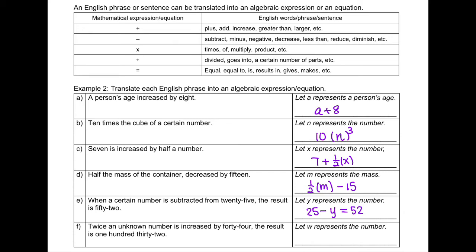Part F: Twice an unknown number, represented by W, is increased by 44; the result is 132. So we write 2 × W + 44 = 132.